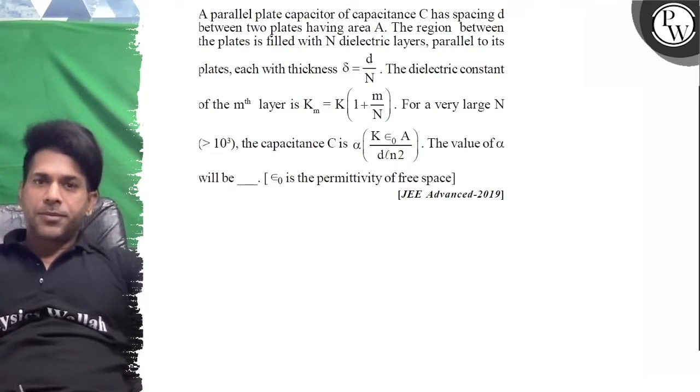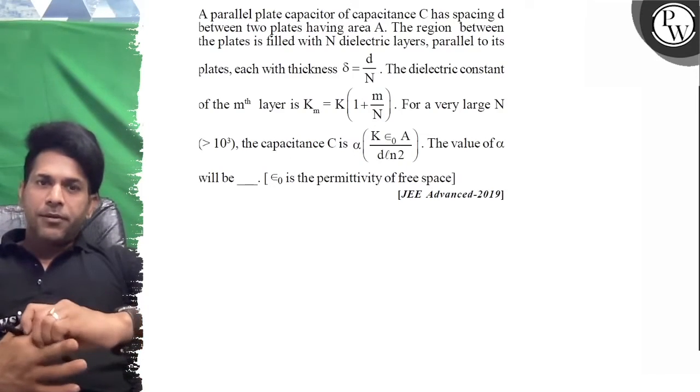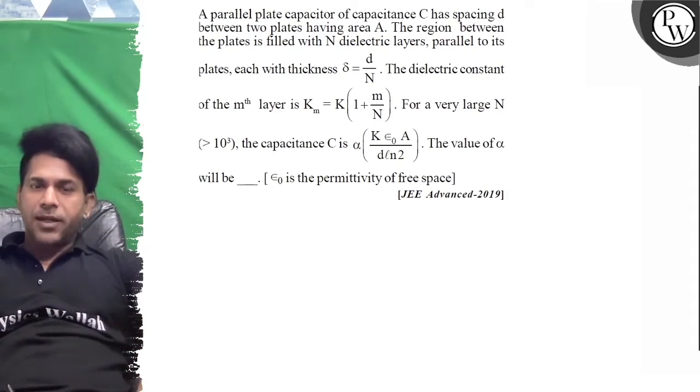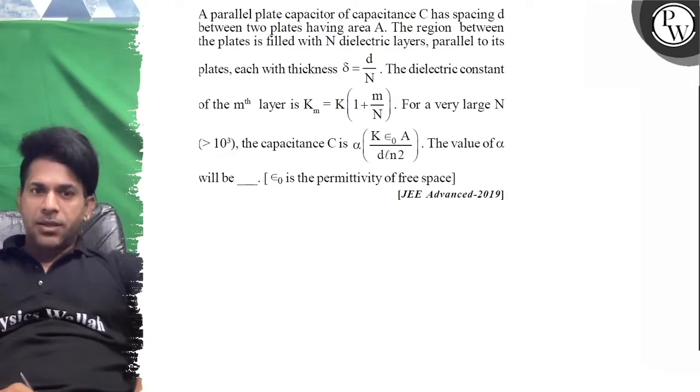Hello, virtual execution of parallel plate capacitor. Capacitance C has spacing d between two plates having area A. The region between the plates is filled with n dielectric layers, each with thickness δ equal to d/n. The dielectric constant of the mth layer is K_m = K₁ + m/n. For very large n, the capacitance C is α. Then the value of α will be which?